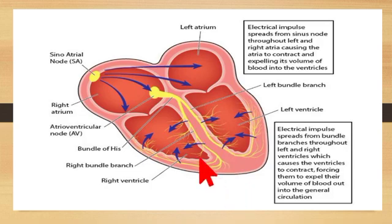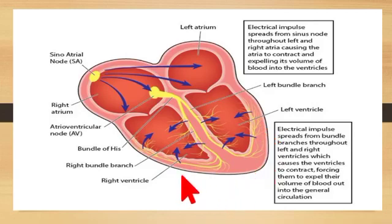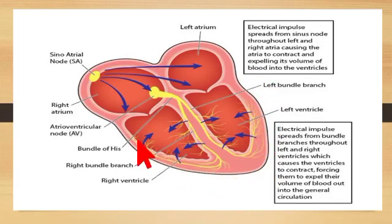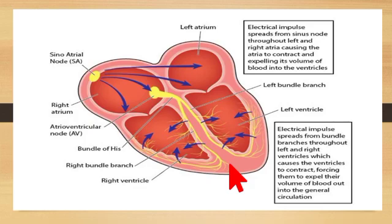From the bundle of His, the electrical impulse finally reaches the Purkinje fibers. You can see it moves to the right and left sides of the heart. These fibers distribute the electrical impulse rapidly to all areas of the right and left ventricles, stimulating them to contract in a coordinated way, pumping blood out of the ventricles.